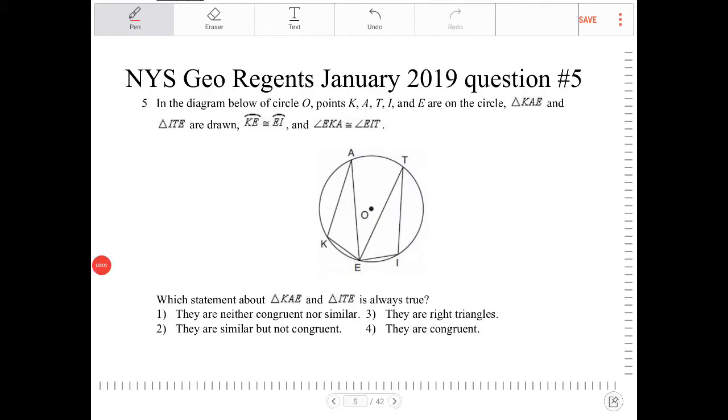In the diagram below of circle O, points K, A, T, I, and E are on the circle. Triangle K-A-E and triangle I-T-E are drawn.